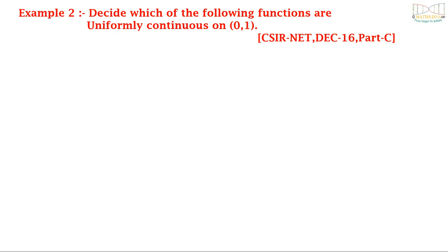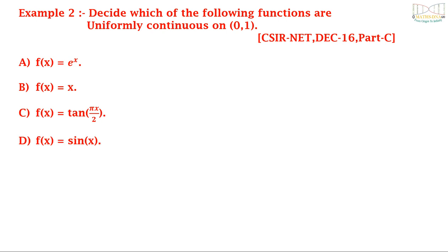Example 2: Decide which of the following functions are uniformly continuous on the open interval (0,1). The options are: A, f(x) = e^x; B, f(x) = x; C, f(x) = tan(πx/2); and D, f(x) = sin(x). This question was asked in CSIR NET December 2016 Part C.